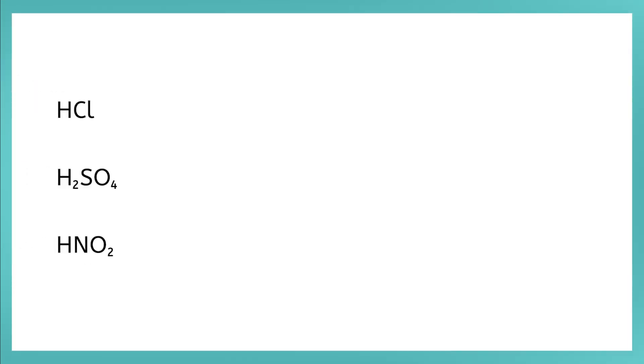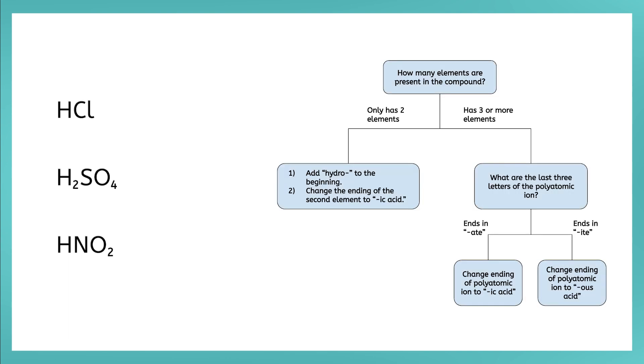What do you notice about the formulas for these acids? They all have hydrogen as the first element in the compound. This makes the rules for naming acids simple. Let's use this flow chart to determine the name of these acids. HCl. There are only two elements, so we add the prefix hydro, and then we change the ending of the second element in the compound to IC and add the word acid. So HCl is called hydrochloric acid.